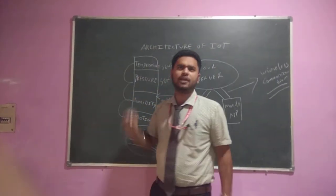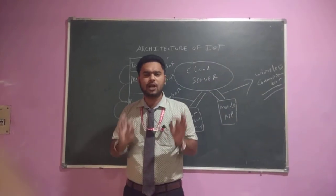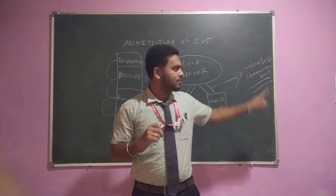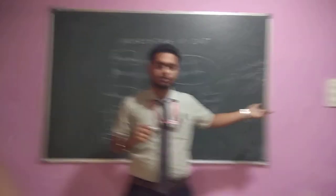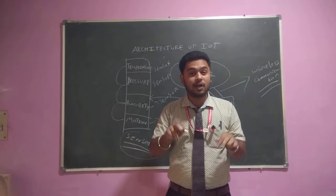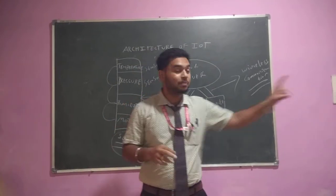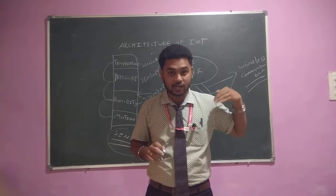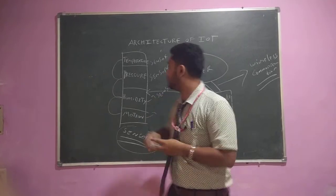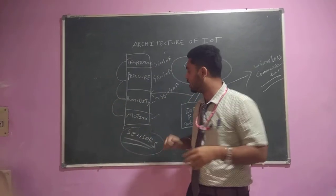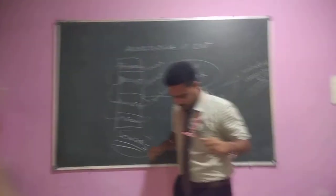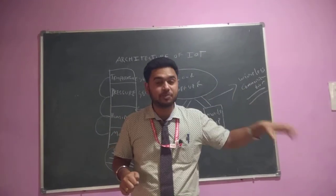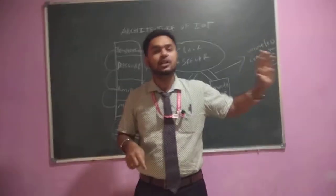For example, take this room — the lights and fans are there. Right now I am simply switching the lights on and off manually, so that is not IoT. If I want to convert this into IoT, I will fix a PIR sensor at the entrance gate. Whenever I come inside, my radiation is captured by the PIR sensor — that motion, temperature, pressure, and humidity are all captured by different kinds of sensors.